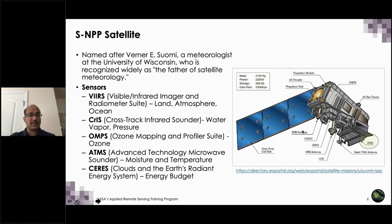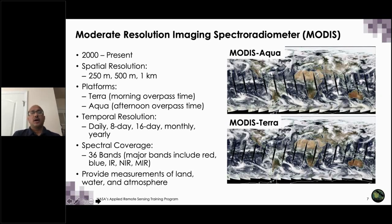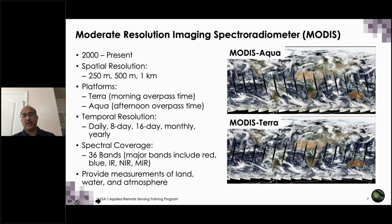MODIS has been in service for almost 20 years. Each sensor is typically designed for five to seven years, but both MODIS instruments have been providing data for 17-plus years — one of them for 20 years. We have data all the way from 2000 to current. There are two MODIS: one on Terra, which makes measurements in the morning, and MODIS Aqua, which makes measurements in the afternoon. The spatial resolution of MODIS varies from 250 meters to one kilometer depending on the spectral channel.